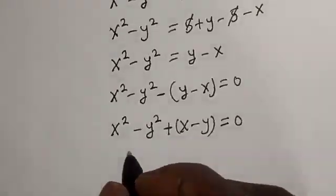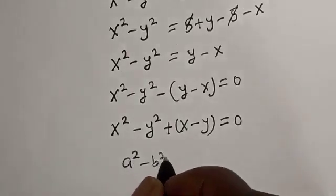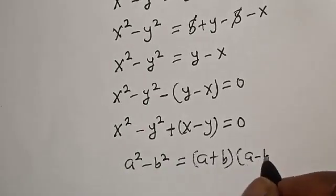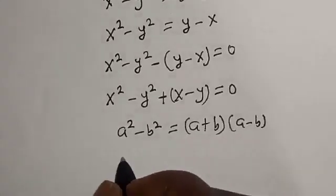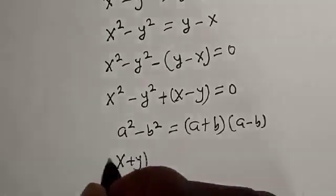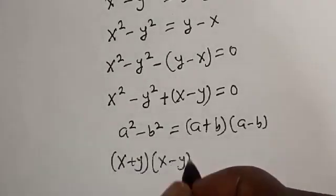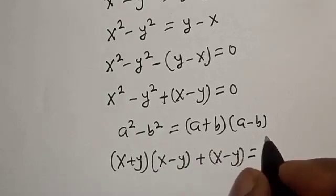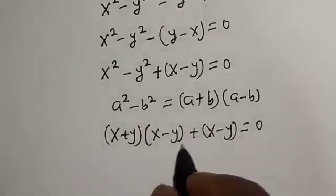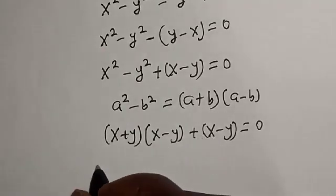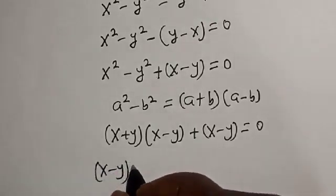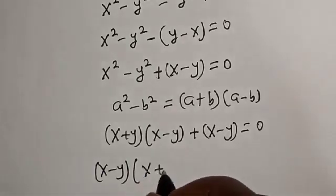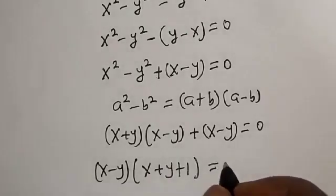Remember the rule that a squared minus b squared equals (a plus b)(a minus b). So we have (x plus y)(x minus y) plus (x minus y) equals 0. Since (x minus y) is common, let's factor it out: (x minus y)(x plus y plus 1) equals 0.